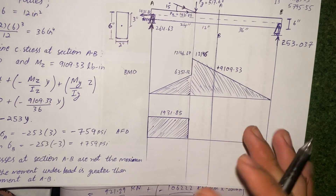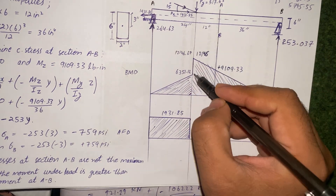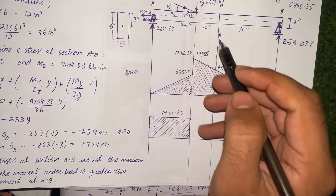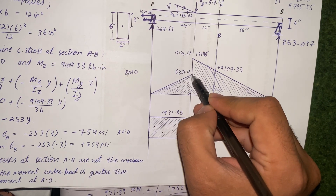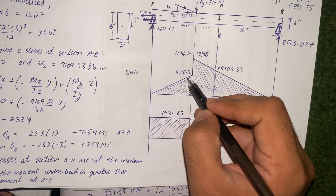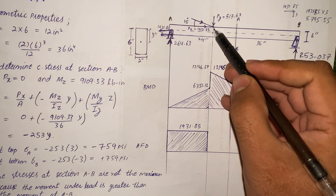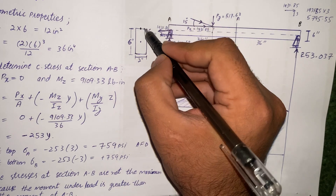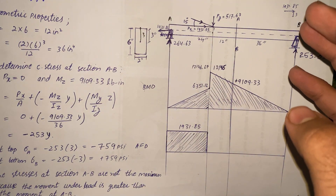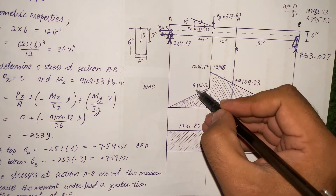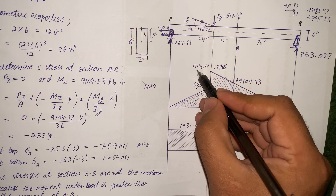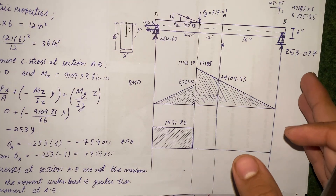To draw the bending moment diagram just to the left of the section, multiply the reaction by the length: 264.63 × 24 gives 6351.12. The bending moment will be a straight line because the shear force is zero degree, making the slope first degree. Also multiply Px by the moment arm of 3 inches: Px × 3 gives 5795.55. Add this to the moment to get the moment just to the left.